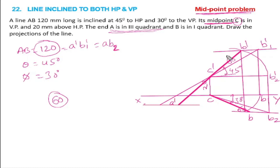So A dash B dash with C dash as the midpoint. Similarly, in the top view, C-B2 is only 60mm. The actual line length is 120mm. C-B2 has a 30-degree inclination, and this line extends at the same 30-degree inclination.